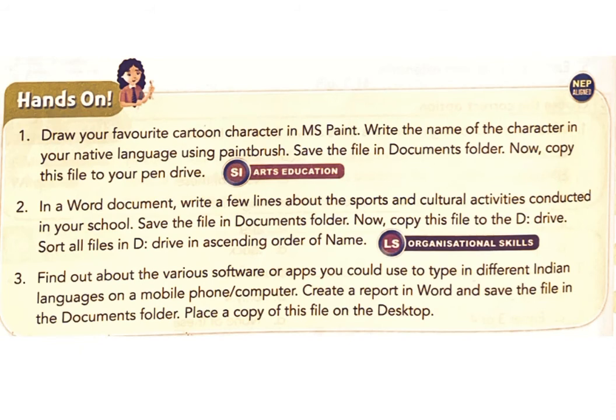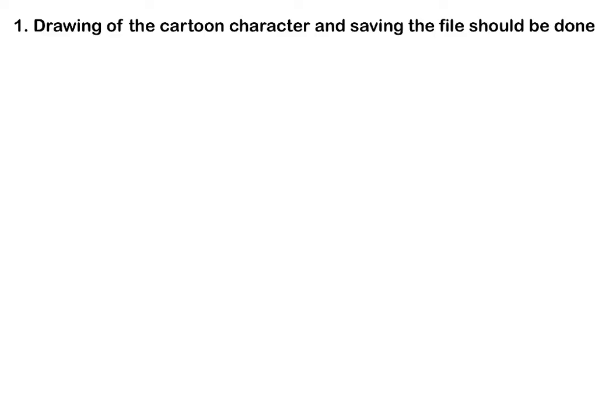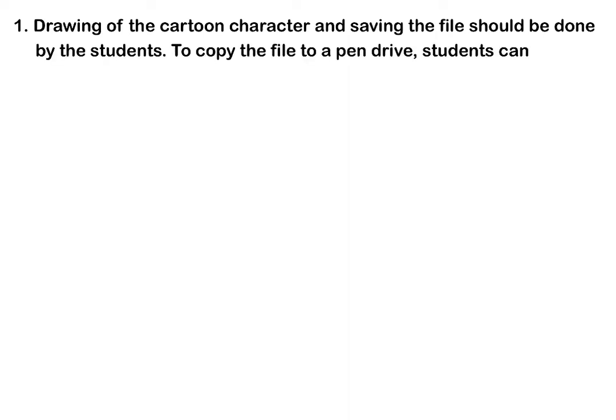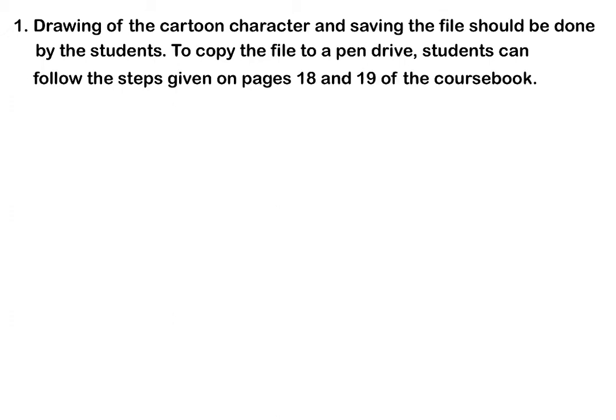Hands-on activity 1: Draw your favorite cartoon character in MS Paint, write the name of the character in your native language using the paintbrush tool, and save the file in the Documents folder. Then copy this file to your pen drive. Answer: Drawing and saving the file should be done by the students. To copy the file to a pen drive, students can follow the steps given on pages 18 and 19 of the course book.